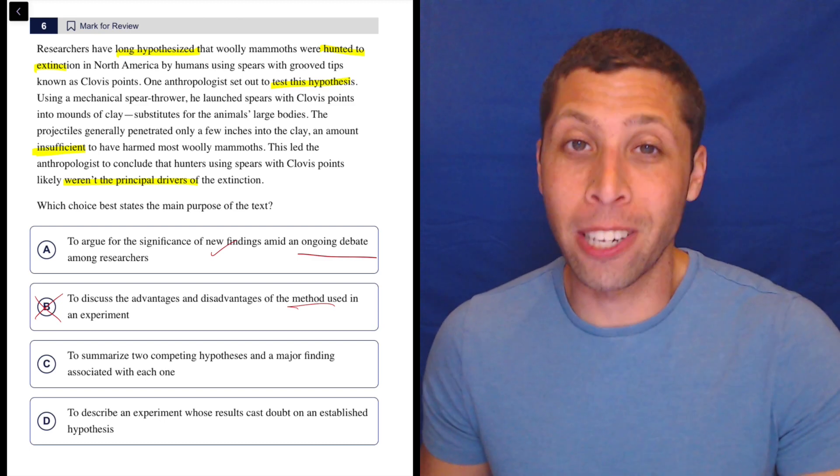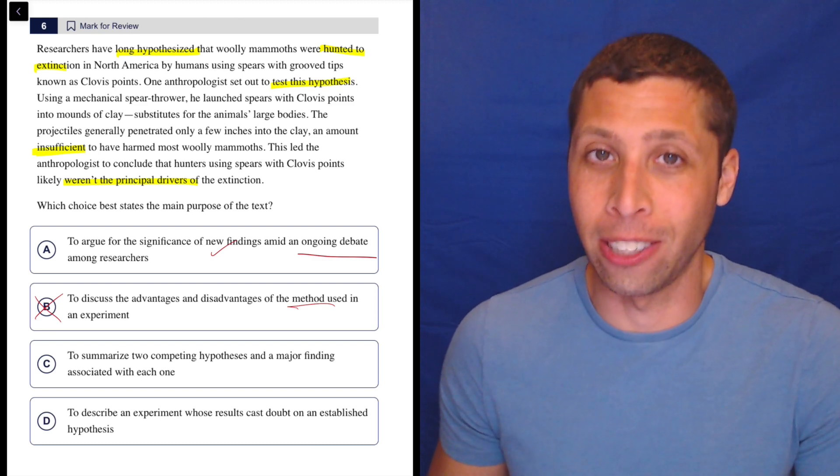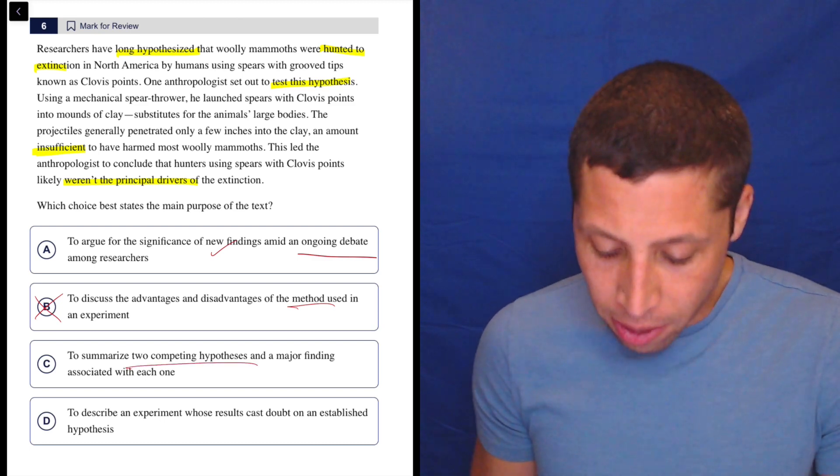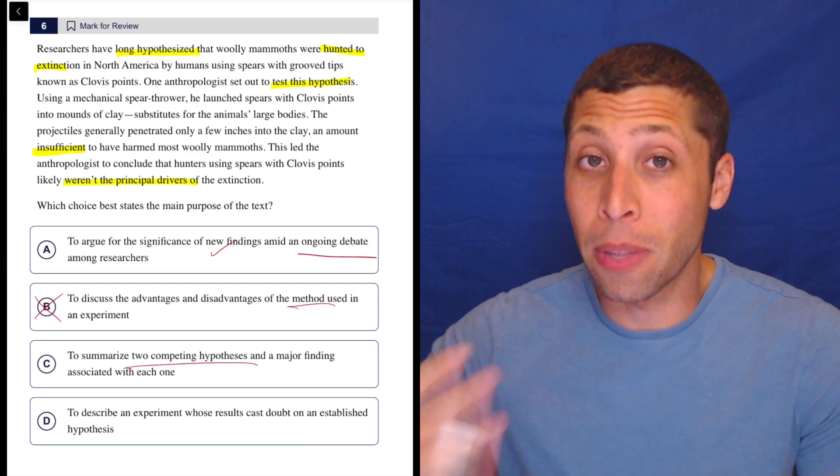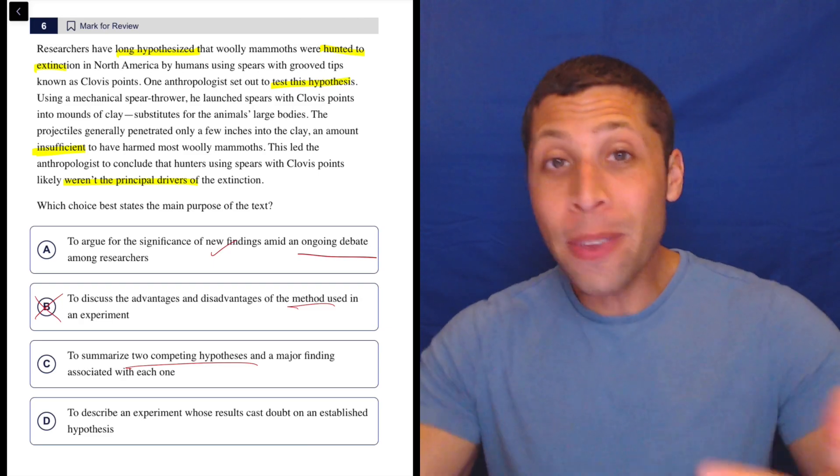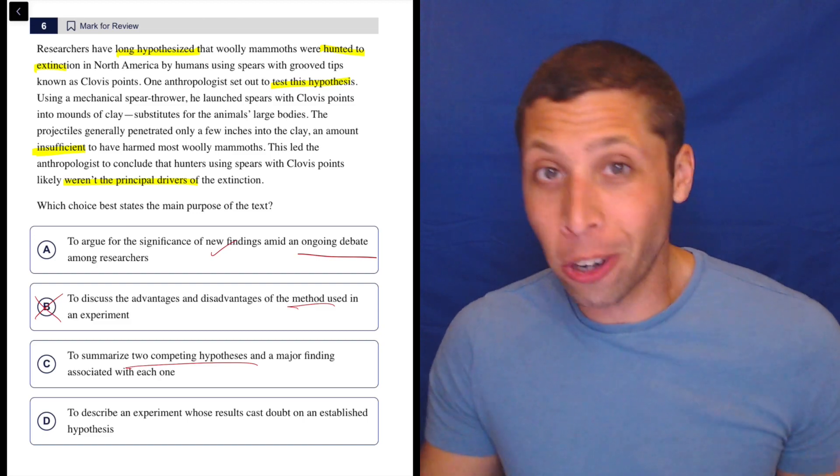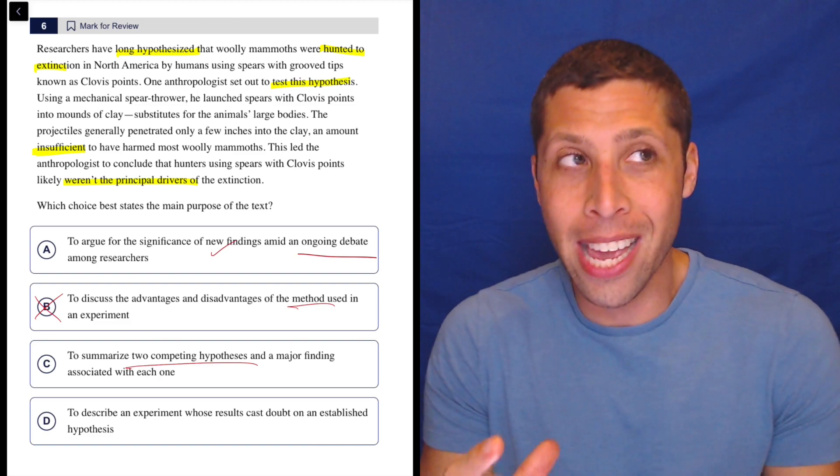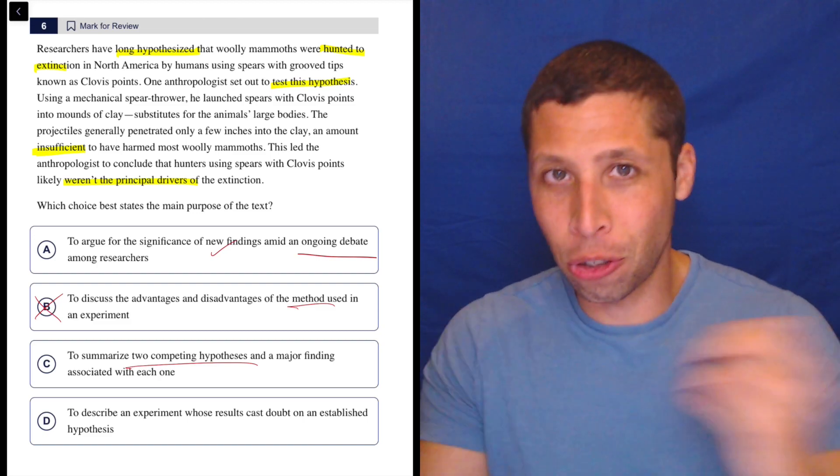Now there's this one piece of evidence that maybe suggests that that's not entirely true. But to say that there were two competing hypotheses from the start is wrong. Maybe the next paragraph of whatever article this passage would be in would say, now there's two schools of thought.